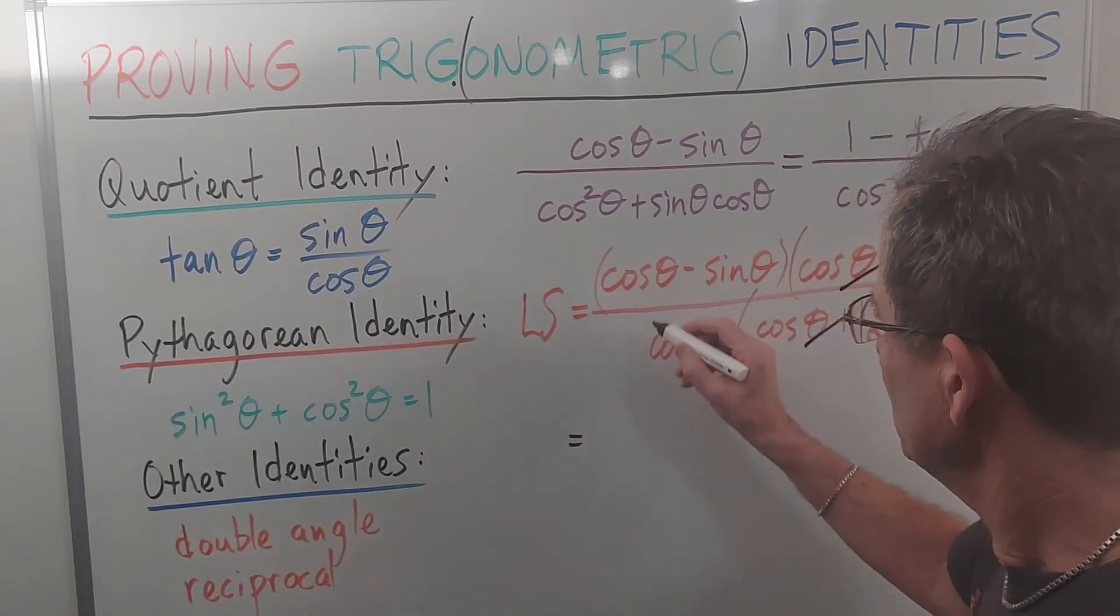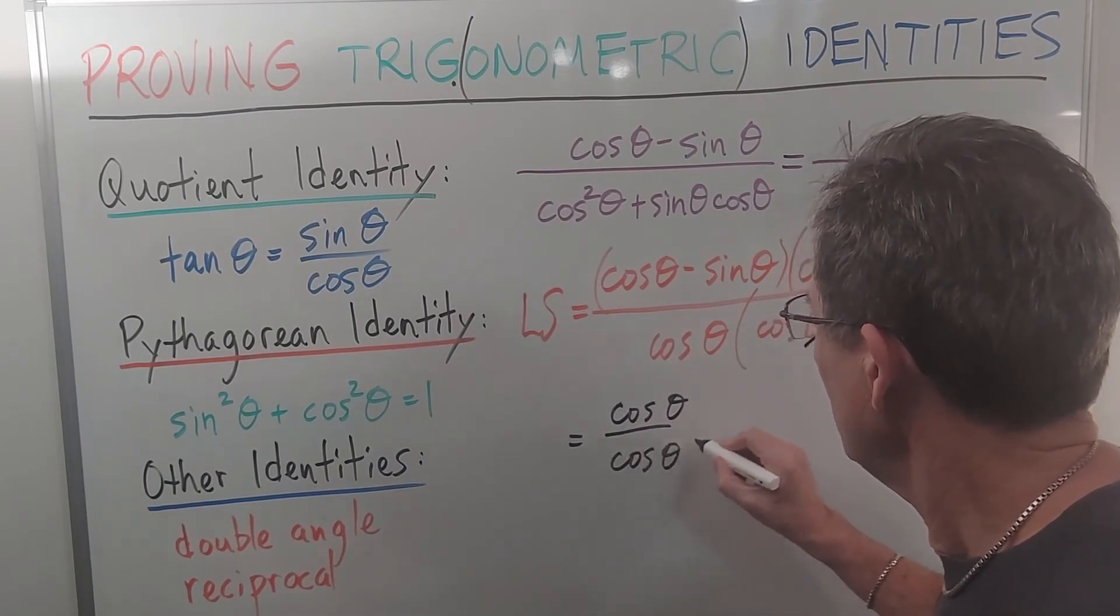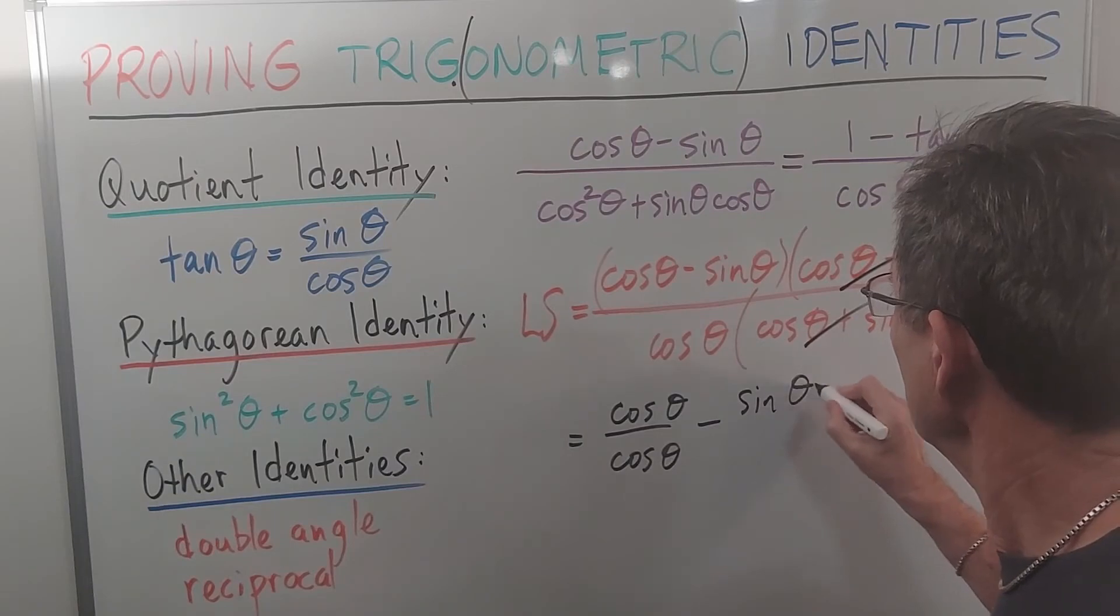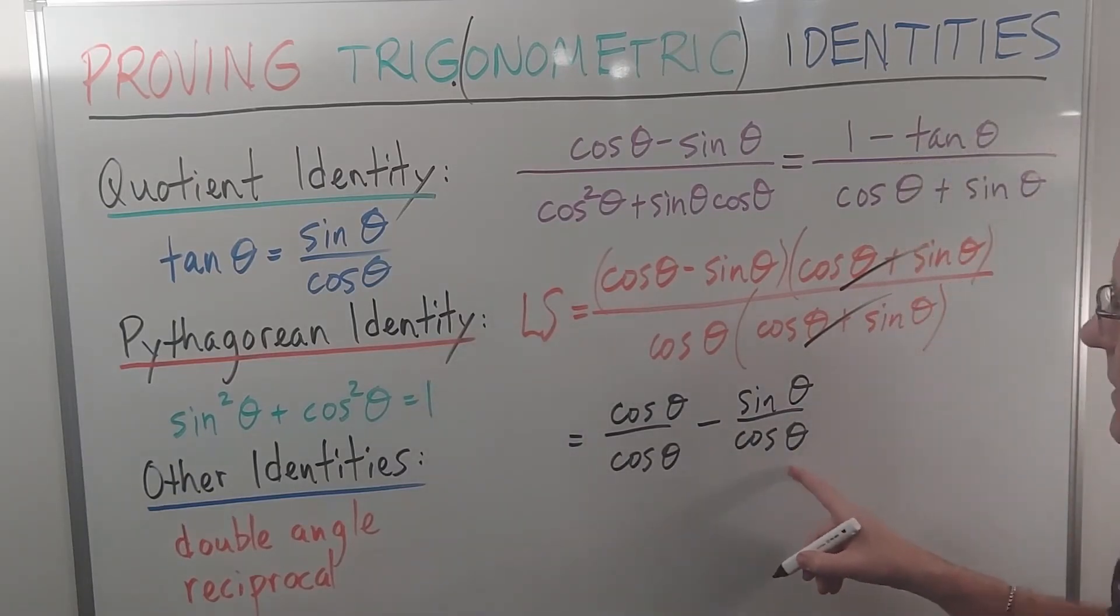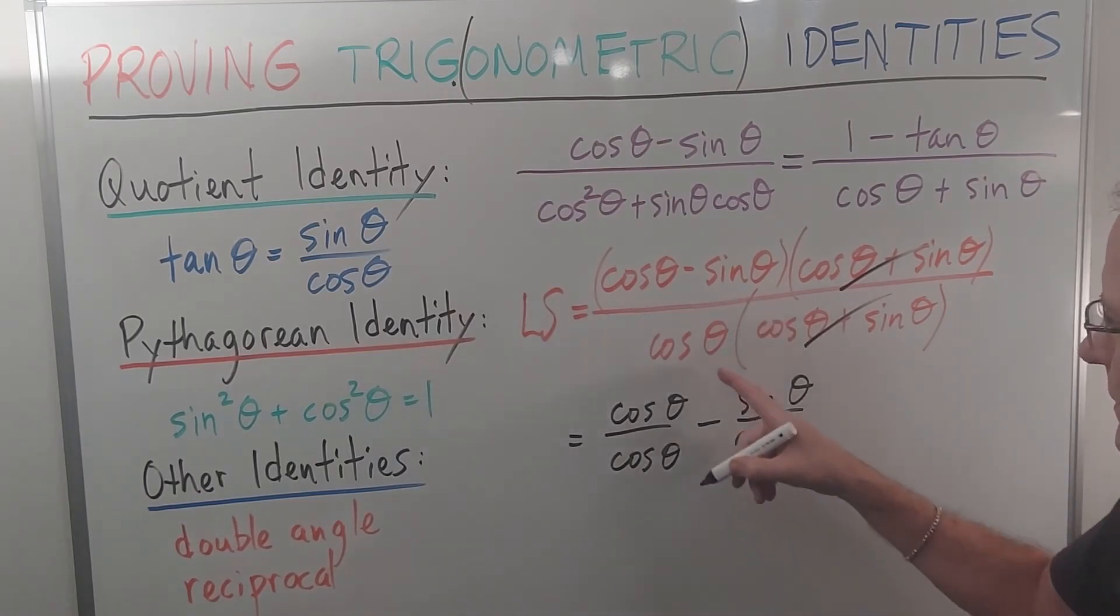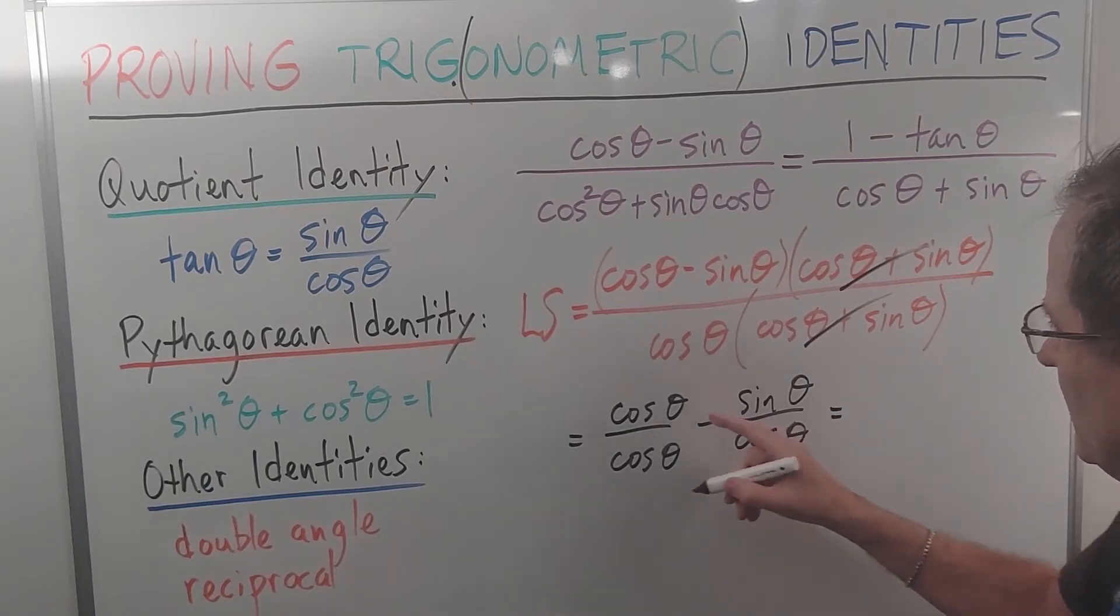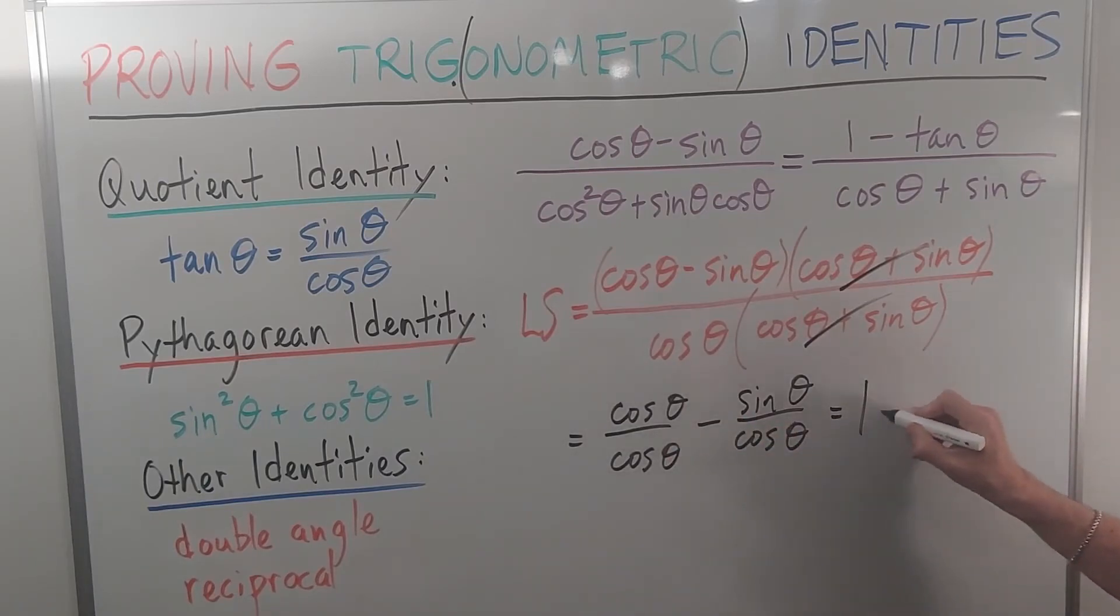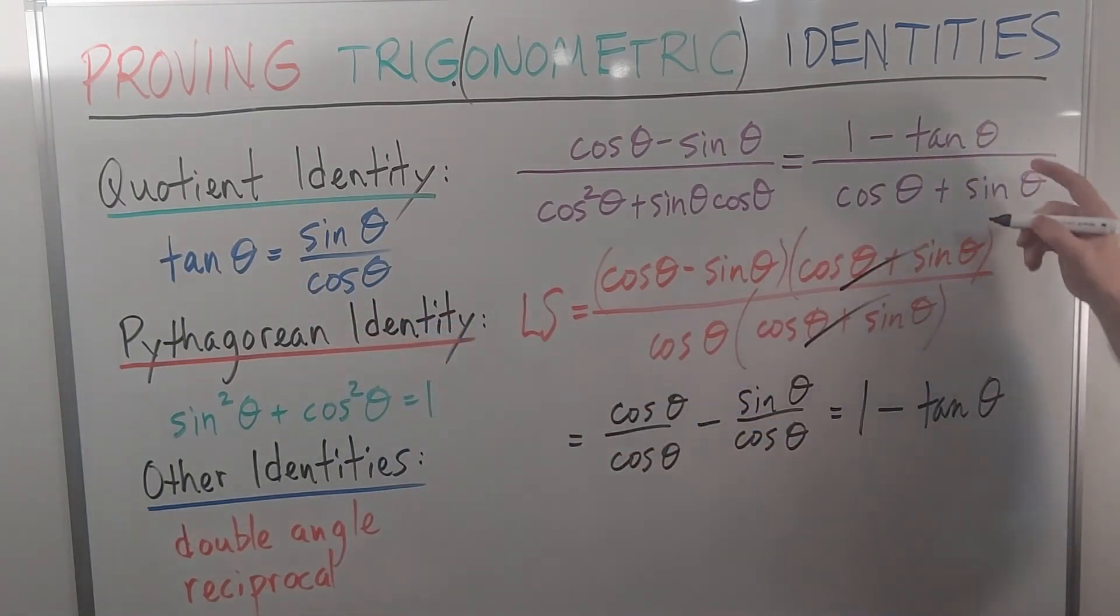But now I'm going to do the reverse of getting a common denominator. I'm going to break it into two fractions. So, the first one becomes cos θ over cos θ, and the second one becomes minus sin θ over cos θ. We want to do that because cos θ divided by cos θ is 1. Sin θ divided by cos θ is tan θ. I've obtained the right-hand side.